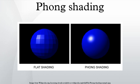Phong shading may also refer to the specific combination of Phong interpolation and the Phong Reflection Model, which is an empirical model of local illumination. It describes the way a surface reflects light as a combination of the diffuse reflection of rough surfaces with the specular reflection of shiny surfaces. It is based on Bui Chuong Phong's informal observation that shiny surfaces have small intense specular highlights, while dull surfaces have large highlights that fall off more gradually. The model also includes an ambient term to account for the small amount of light scattered about the entire scene.